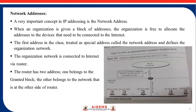Next, we will discuss the network address, which is a very important concept in IP addressing. When an organization is given a block of addresses, it is free to allocate those addresses to devices that need to be connected to the internet. However, the first address in the block is normally treated as a special address — it is called the network address and defines the organization's network to the rest of the world. As shown in the figure, the router has two addresses: one belonging to the granted block and the other belonging to the network on the other side of the router, connecting the organization to the internet.